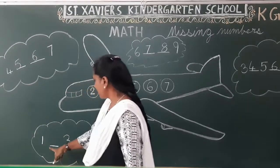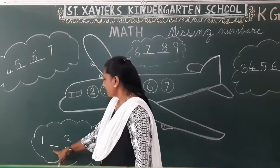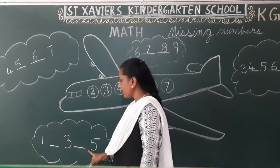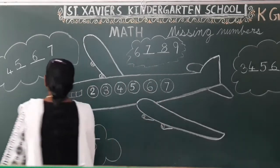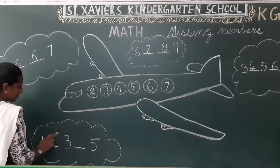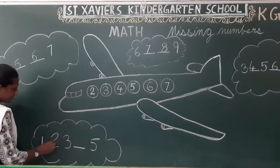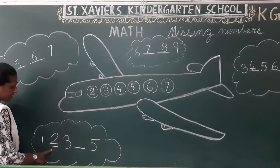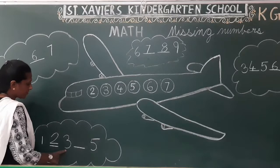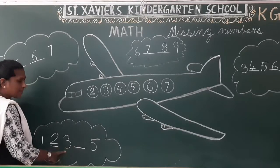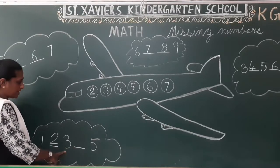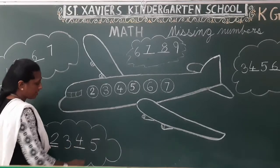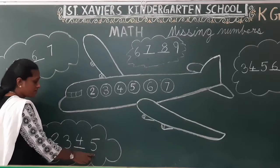Understood? Now: one, dash, three, dash, and five. What number is missing over here? What comes after one? Two. I am going to write one. So one is there, then two. What comes after two? Three — already written. What comes after three? Four. Then what comes after four? Five.